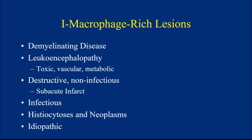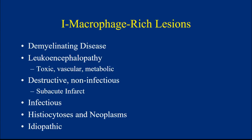There are various non-neoplastic lesions that can affect the CNS. Demyelinating diseases are a chief consideration because they can present with a preoperative concern for tumor. There are also a variety of leukoencephalopathies — toxic, vascular, metabolic, and some inherited. Some destructive but non-infectious causes include subacute infarct, which often involves gray matter. Infectious causes — a variety of infections can do that. You also have to think about neoplastic processes: true histiocytosis, and lymphoma treated with steroids prior to biopsy, which can give you a sheet of macrophages indistinguishable from other macrophage-rich lesions. The history is very important here.